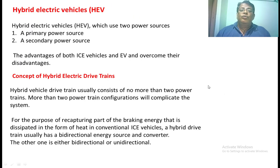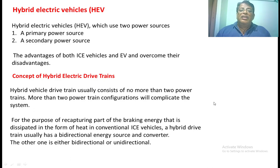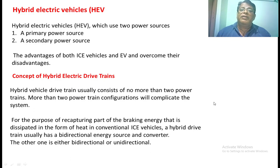The hybrid vehicle is one which has two sources: one is the primary source and another is the secondary source. Generally, the primary source is an IC engine, and the secondary source is an EV — an electrical based vehicle — where the battery gives power to the motor, and the motor gives power to the transmission system, which drives the front two wheels. To reduce complexity in hybrid driven vehicles, we generally do not take more than two sources, as more sources increase system complexity and make controlling the vehicle very difficult.